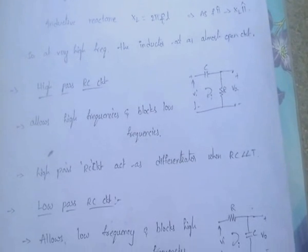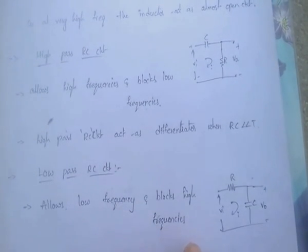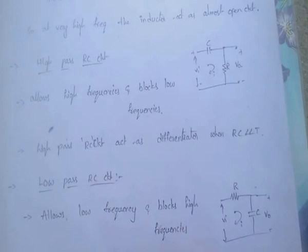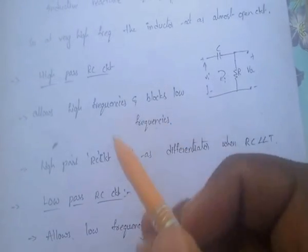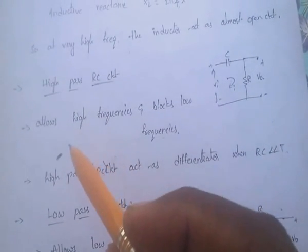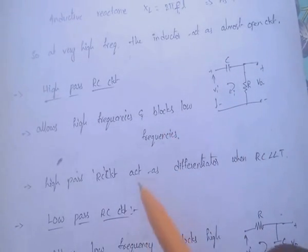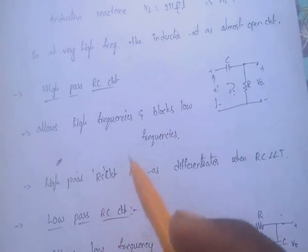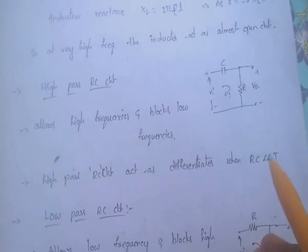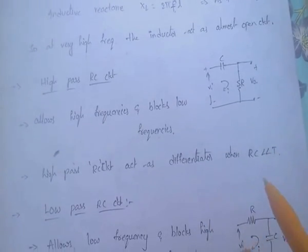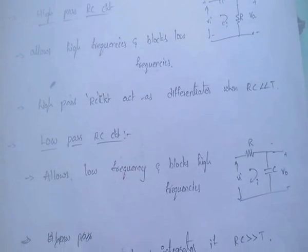Coming to the high pass RC circuit and low pass RC circuit: the high pass RC circuit allows high frequencies and blocks low frequencies, and it acts as a differentiator when RC is much less than T.